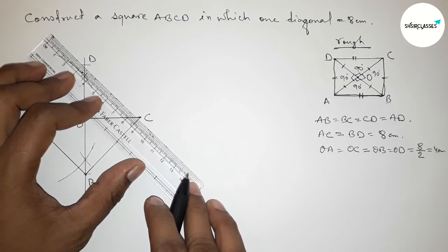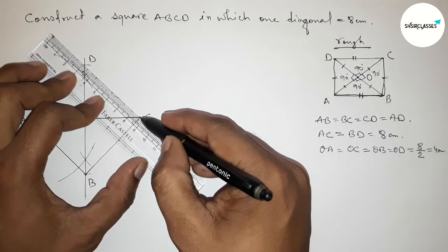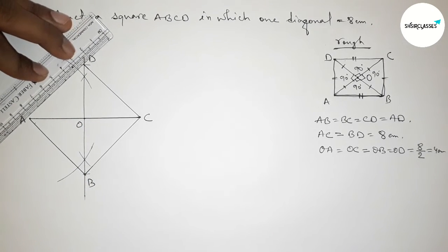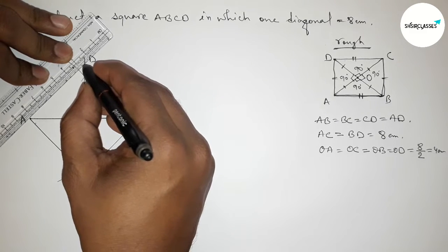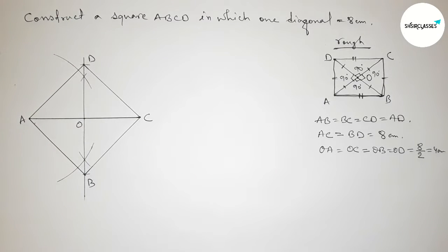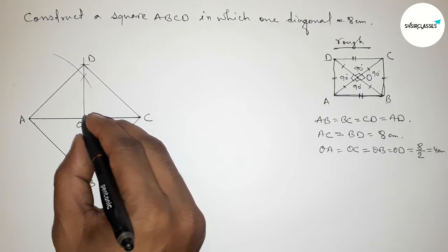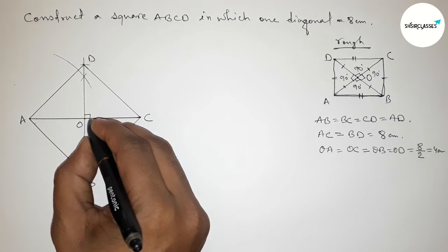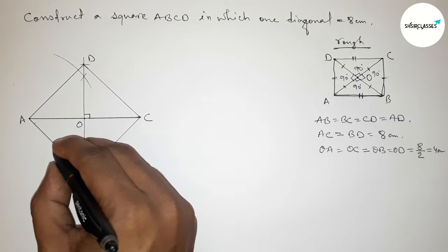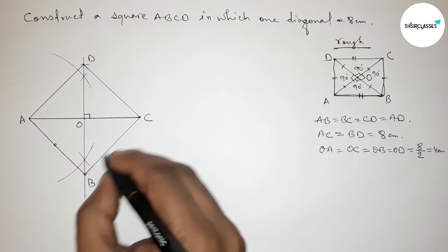Next joining the side AB, then joining the side BC, then joining the side CD, and last joining the side AD to get square ABCD.